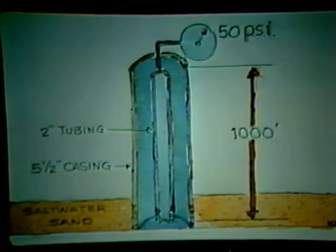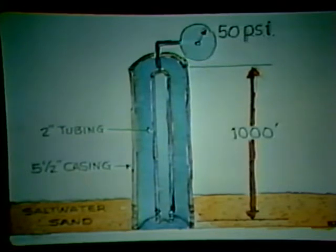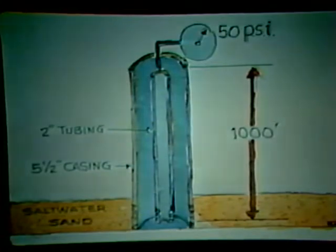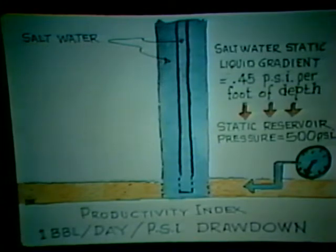To understand how gas lift works, certain principles must be grasped. First, note this schematic of a simple well situation. The well is 1,000 feet deep and produces salt water. There is two inch tubing inside five and a half inch casing and the tubing pressure to be held is 50 psi. The salt water in the well gives a static liquid gradient equal to 0.45 psi per foot of depth — that is, for every foot of depth, the salt water will exert 0.45 pounds per square inch of pressure.